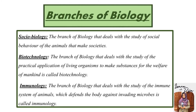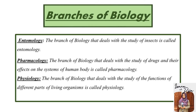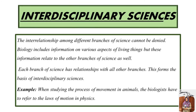The branch of biology that deals with the study of practical application of living organisms to make substances for the welfare of mankind is known as biotechnology. Immunology is the branch in which we study the immune system of animals and how it performs against microbes or disease. The study of insects is called entomology. The study of drugs and their effects on the human body is known as pharmacology, and the study of functions of different parts of living organisms is known as physiology.